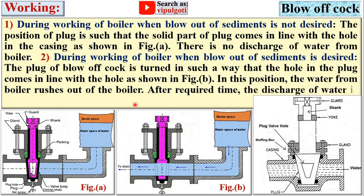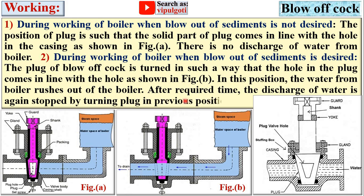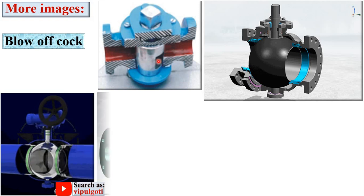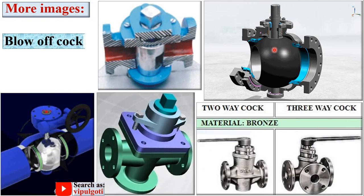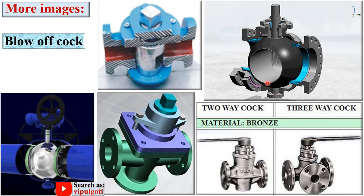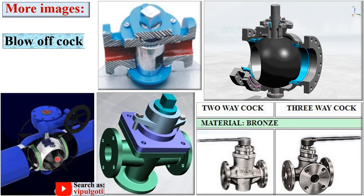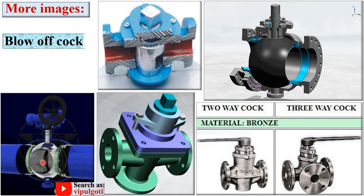In this open position, the water from the boiler rushes out. After the required time, the discharge of water is again stopped by turning the plug back to the previous position. So in the closed condition the water is held, and in the open condition the water rushes out from the boiler. Here you can see the model of the blow-off cock — it uses a conical plug, and when the hole is in line with the pipe, the fluid will flow.